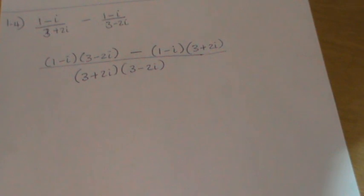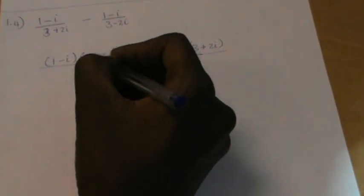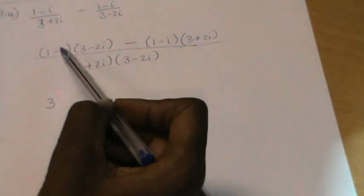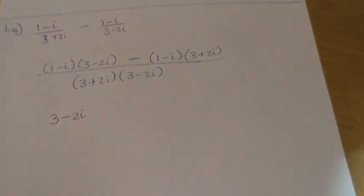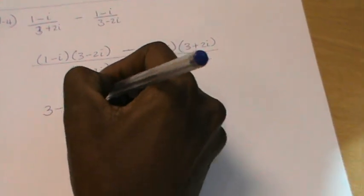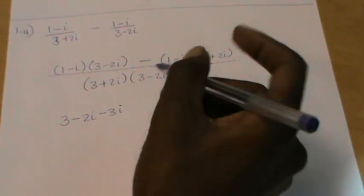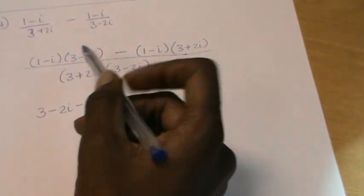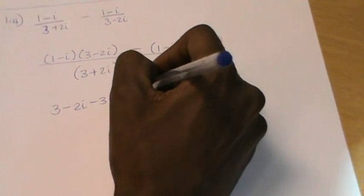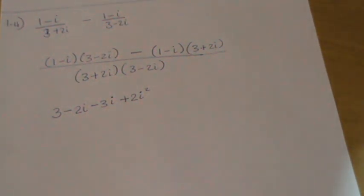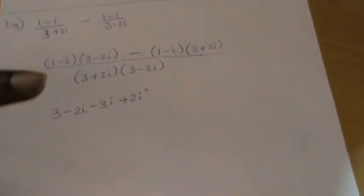Now I multiply out the brackets — everything in the first bracket multiplies everything in the second bracket. So 1 times 3 is 3. Then 1 times minus 2i is minus 2i. Then minus i times 3 is minus 3i. Then minus i times minus 2i: negative times negative gives positive, and i times i is i squared, so I have positive 2i squared. I haven't worked out the value of i squared yet — I'm just writing down the product of the two brackets.